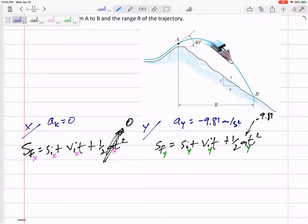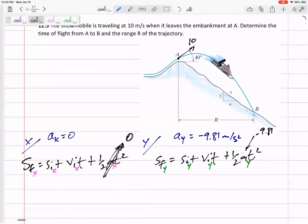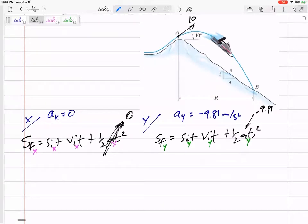All right, so let's look at this one. I know y'all previewed this one, so you know how to do this one, right? So if it's going at 10 meters per second at a 40-degree angle, then let's look only in the x direction.